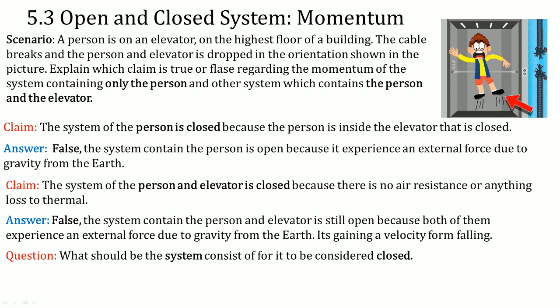So the question then: what should the system consist of for it to be completely closed? It has to include the person, the elevator, and Earth. Those three together in a system would be considered closed — momentum is constant. This is a very important consideration when determining if a system is closed.